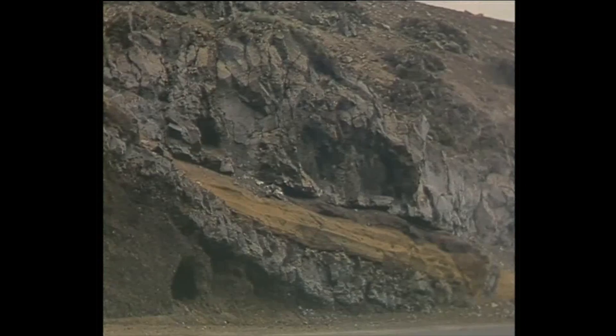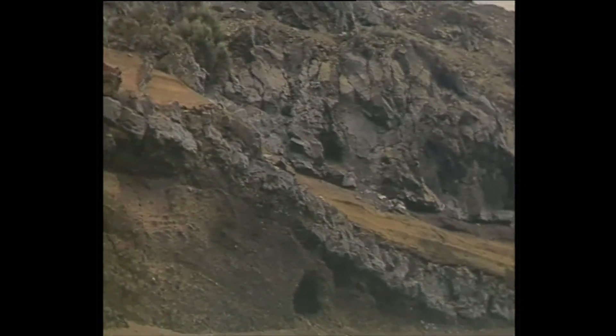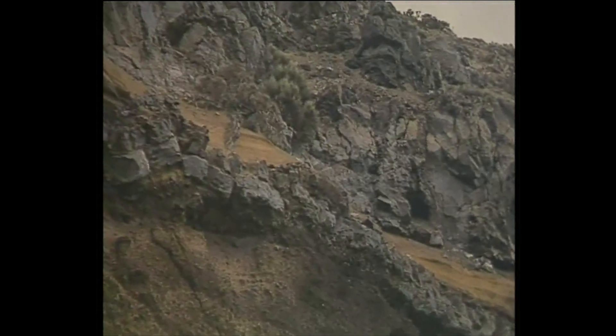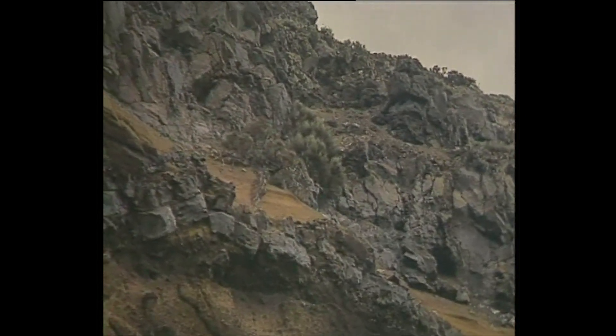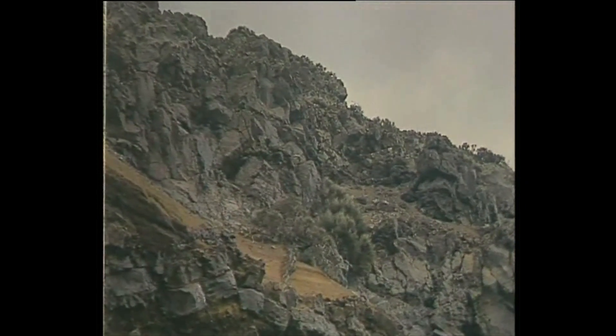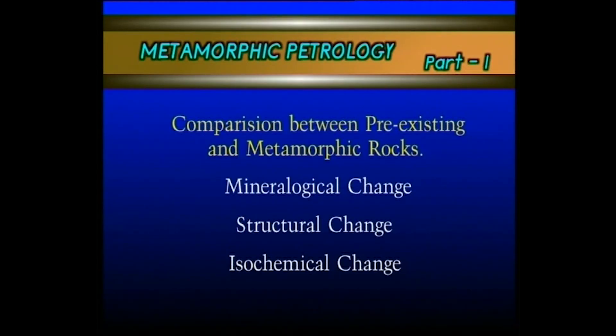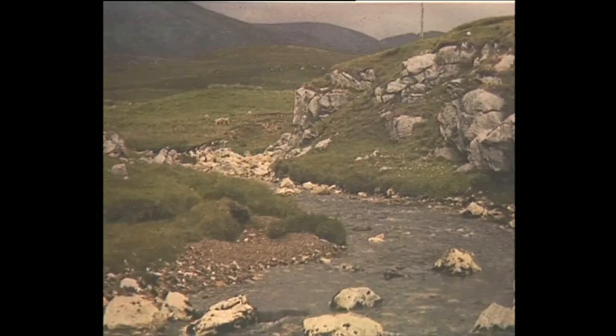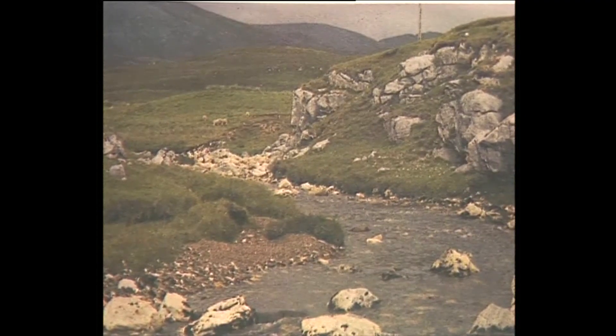Metamorphism occurs first in greywacke or in basic igneous rocks, which are normally prone to weathering and metamorphism. These are the factors by which sedimentary or igneous rocks change into metamorphic rocks under the effect of pressure and temperature. There must be a mineralogical change and a structural change as compared to pre-existing rocks. Particularly, metamorphism starts always above 200 degrees centigrade.